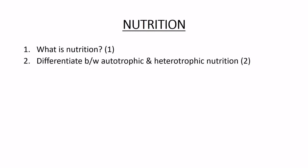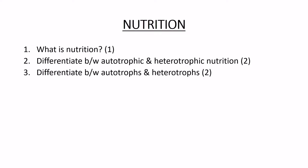In this chapter, what is nutrition? It is a process of obtaining nutrients. Differentiate between autotrophic and heterotrophic nutrition. What is nutrition? It is a process of obtaining nutrients. Differentiate between autotrophic and heterotrophic nutrition.